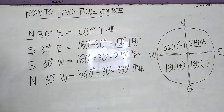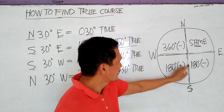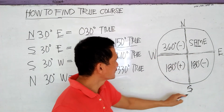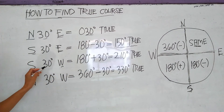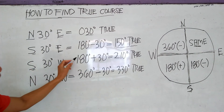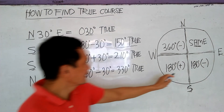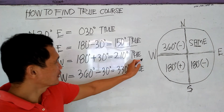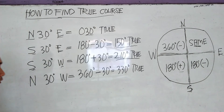Now, let's proceed to South-West. The South-West formula is 180 plus the course angle. So, 180 plus 30 degrees — therefore, the true force is 210 degrees true.